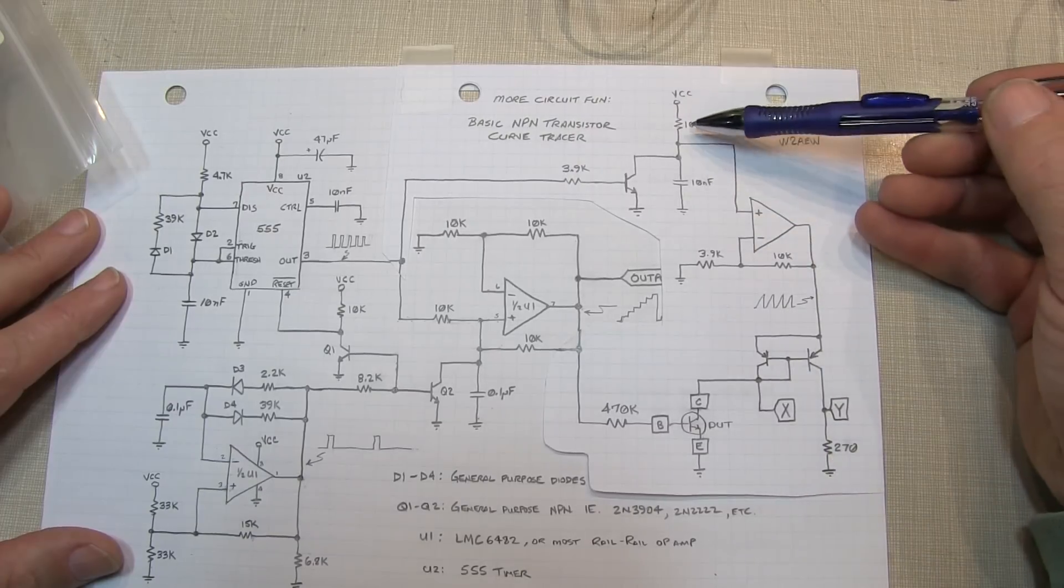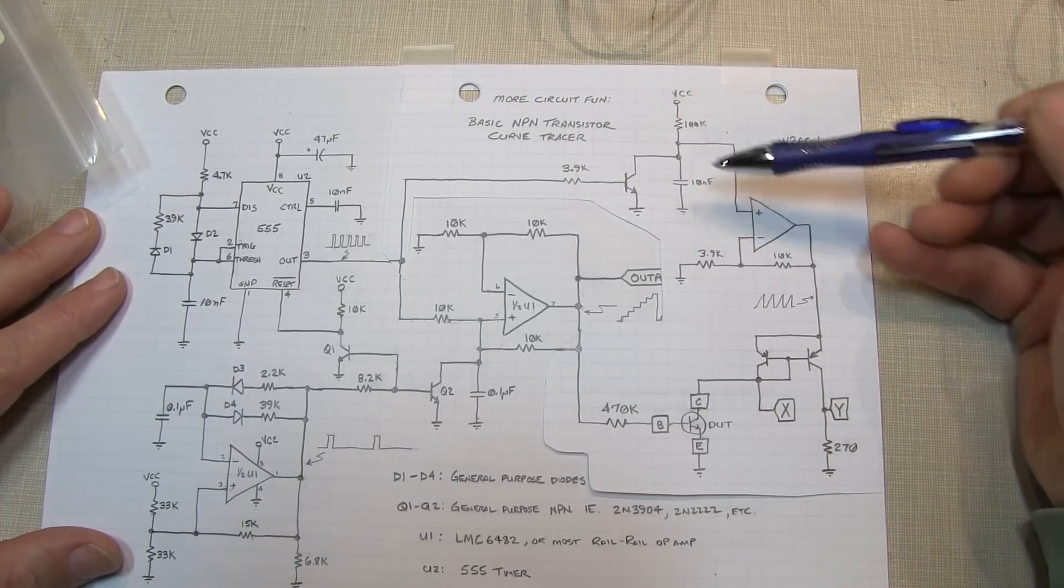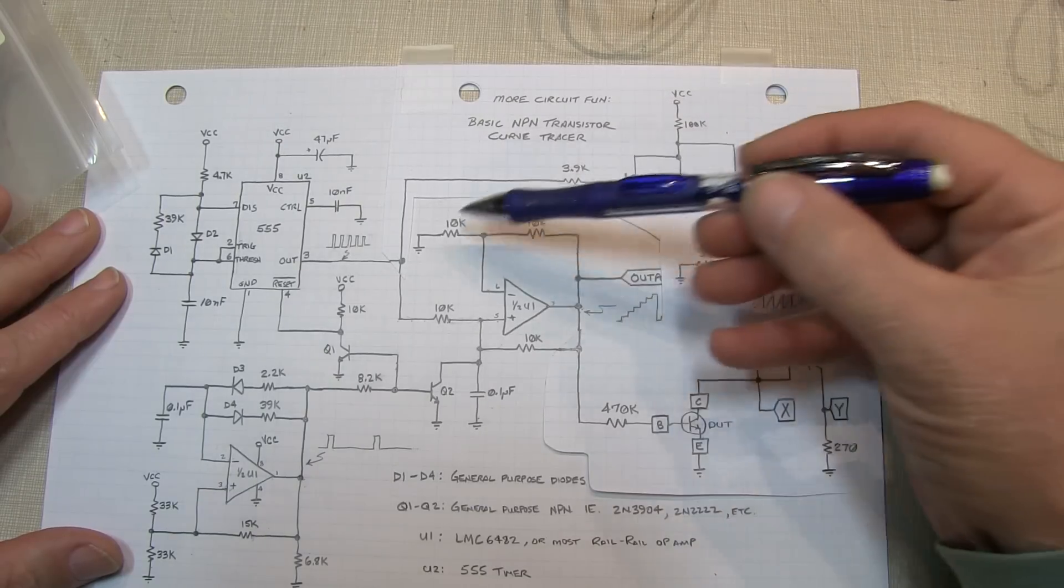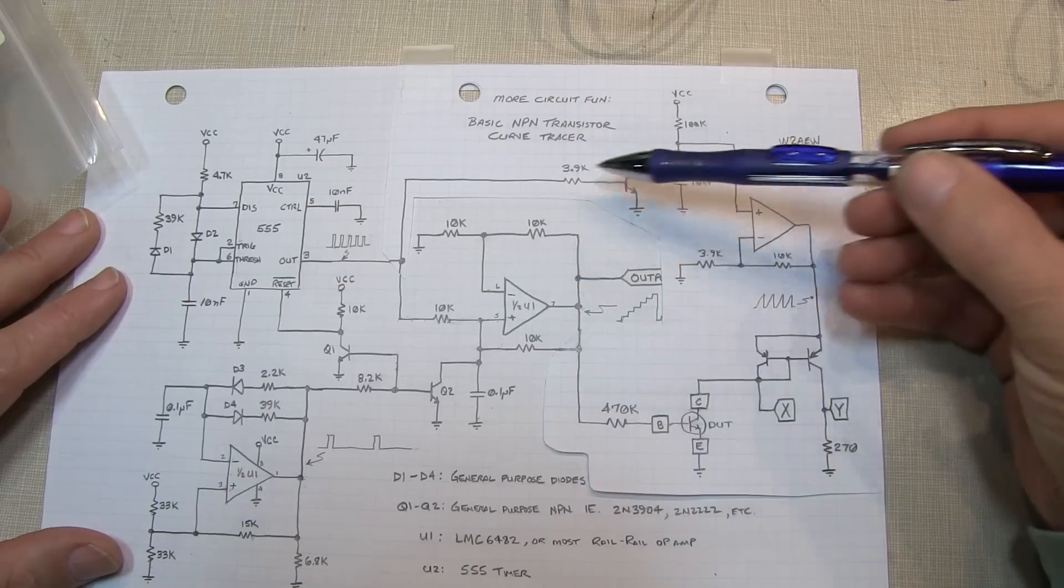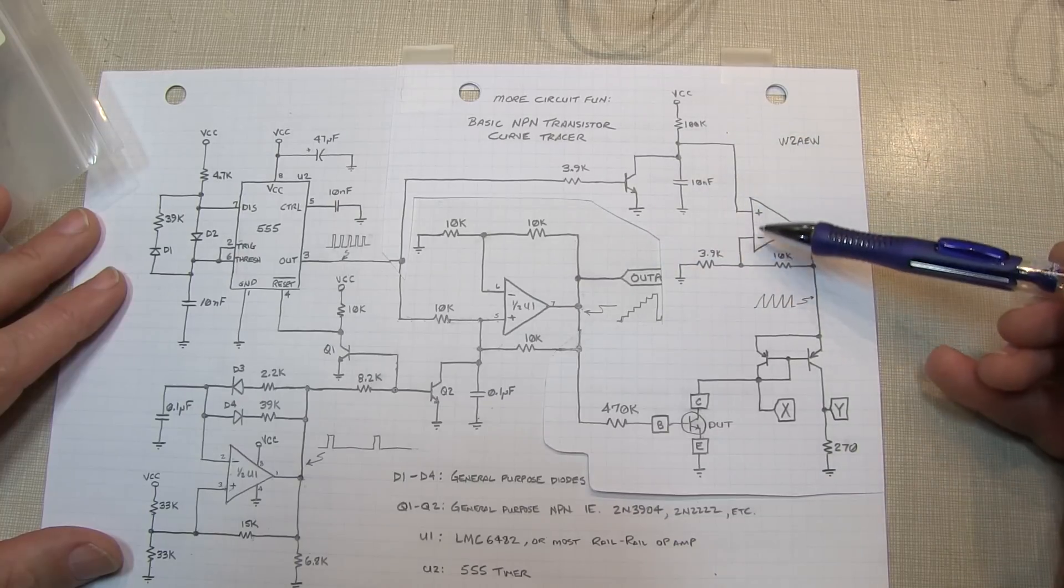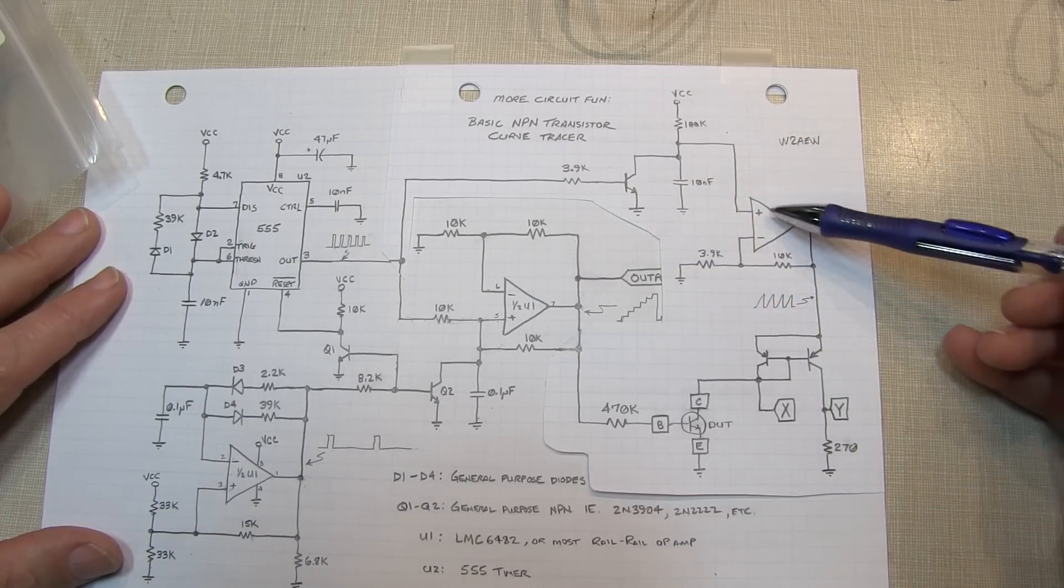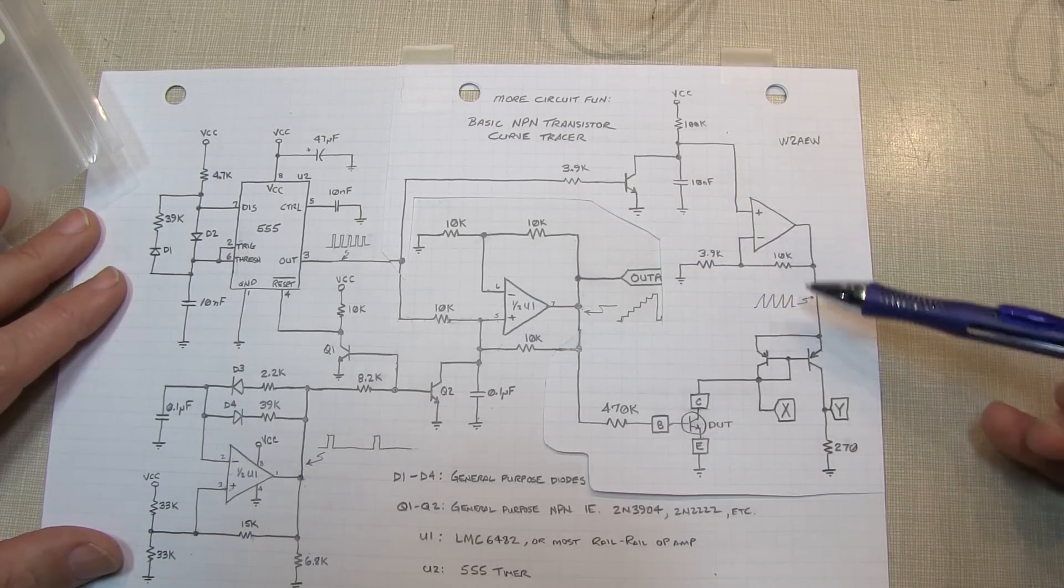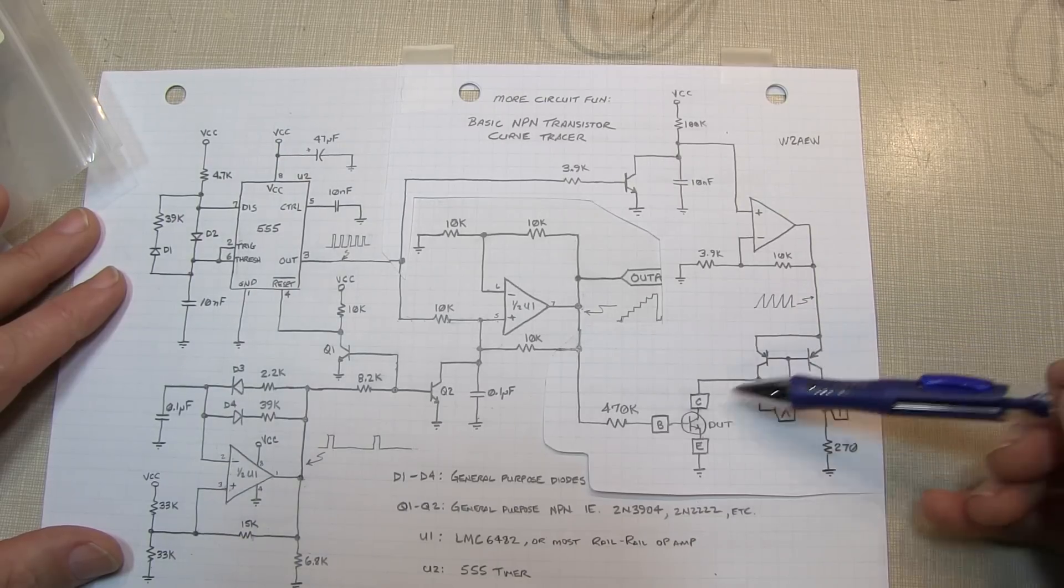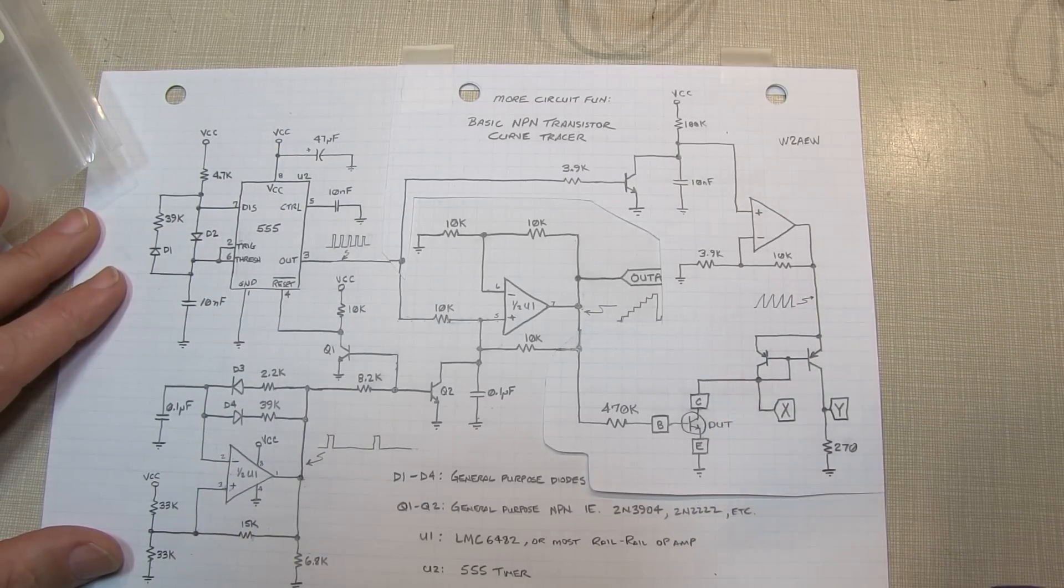The collector voltage ramp is generated by charging up this capacitor through this resistor here, and then that's being reset by the pulses coming from the 555 timer using this transistor here. The voltage here is being buffered and amplified by this simple non-inverting op amp amplifier. That's applied to our collector.